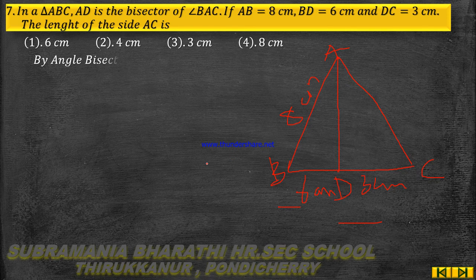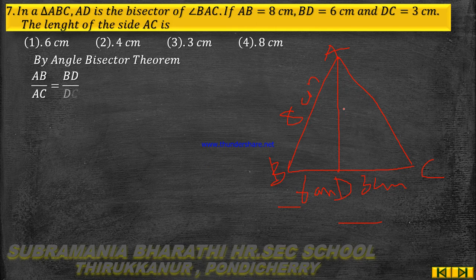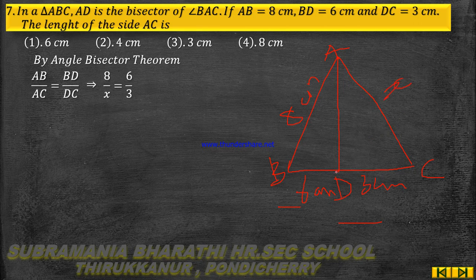By the angle bisector theorem, we have AB by AC equal to BD by DC. The length of AB is 8 cm, so we write 8 by X, where AC is taken as X. BD by DC is equal to 6 by 3.